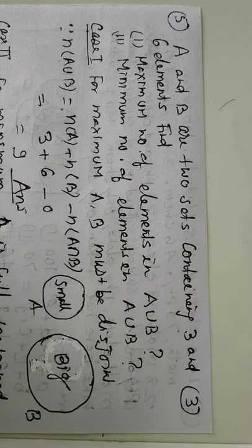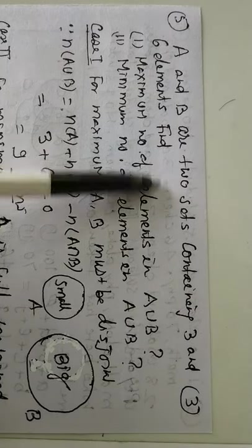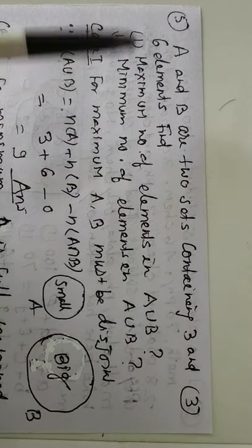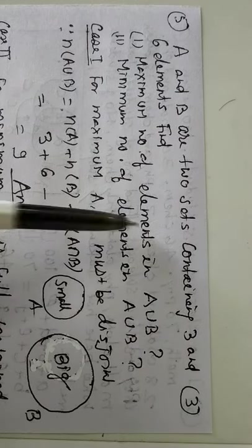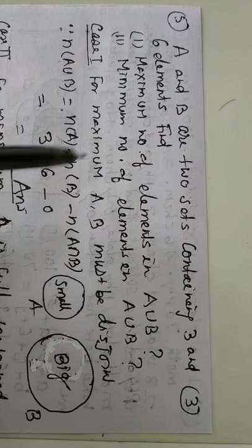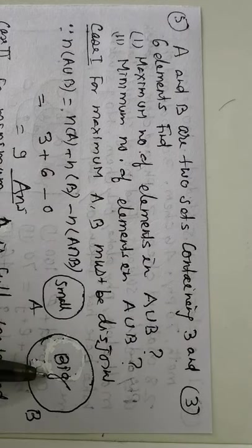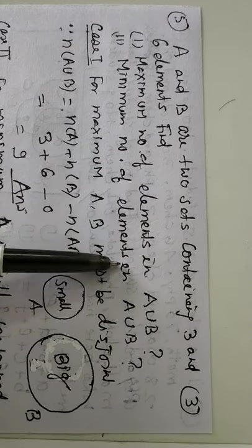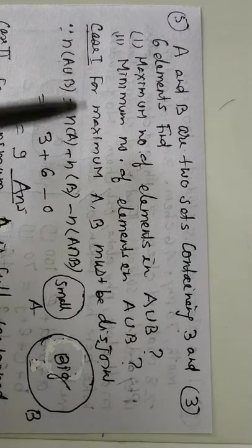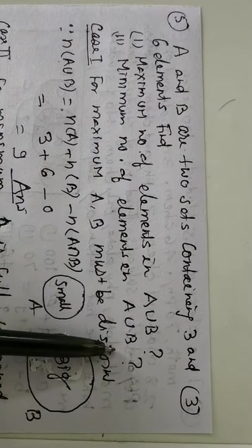Next, this is question. A and B are two sets containing 3 and 6 elements. A is smaller because it has 3 element. B is larger because it has 6 element. Find the maximum number of element in A union B and minimum number of element in A union B.